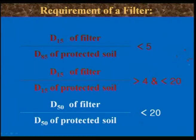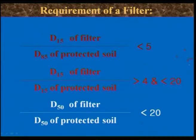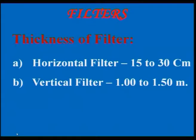From the gradation curve, determine D85 of the soil. Multiply that size by 5 to get D15 of the filter. Similarly, you can find D50 of the filter. Indirectly, you are finding the gradation curve of your filter: once you know the gradation curve of the protected soil, you can determine what the particle size distribution inside the filter should be from these criteria.